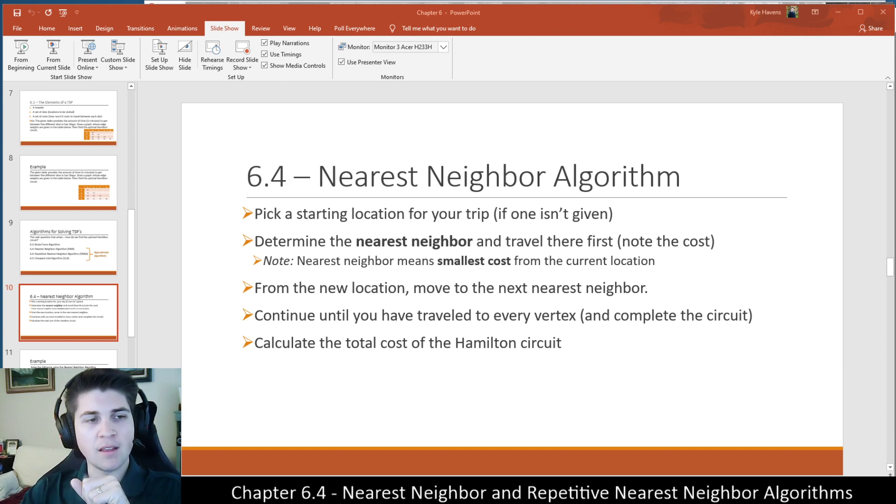So let's review the algorithm itself. We want to start by picking a starting location for our trip. Typically it's where we live. But we don't necessarily need to start the algorithm at that point to find a circuit. And then from there, we're going to travel to the nearest neighbor. So by definition, the nearest neighbor is the cheapest location from the current location.